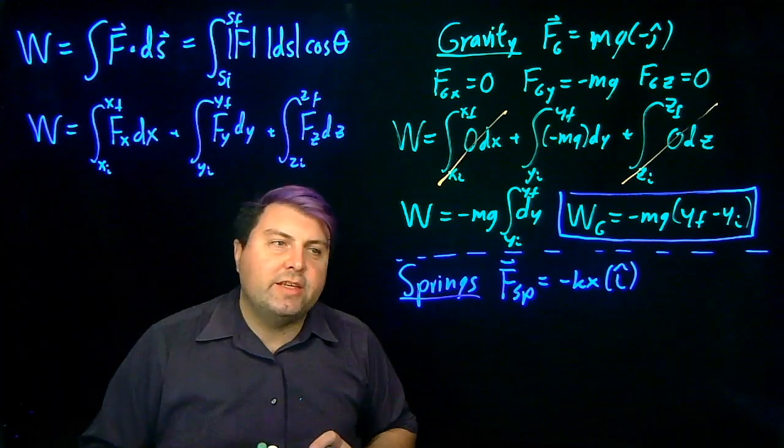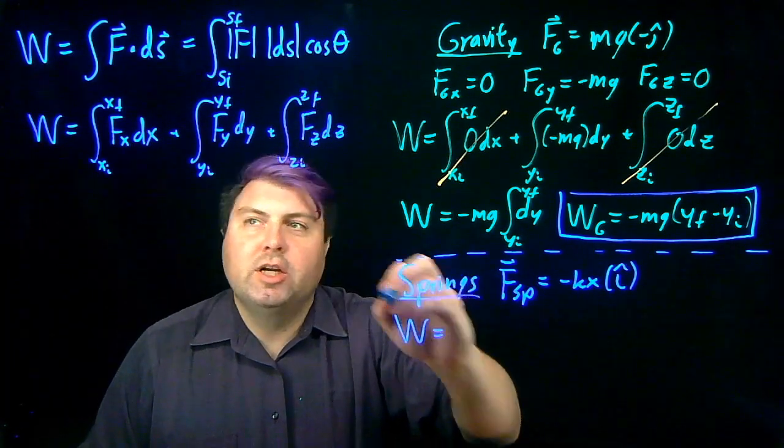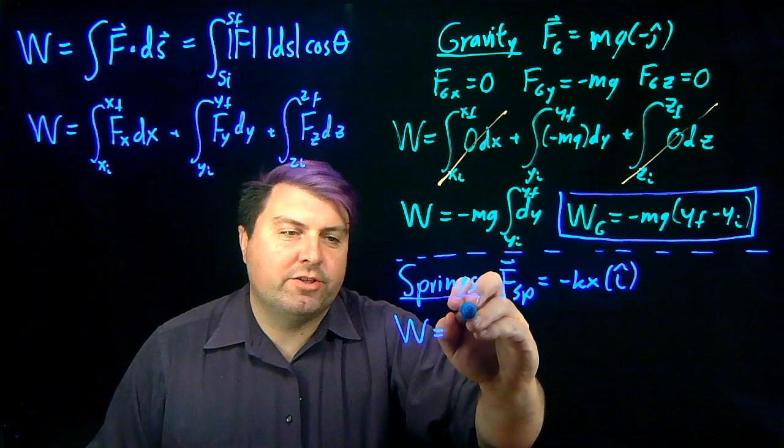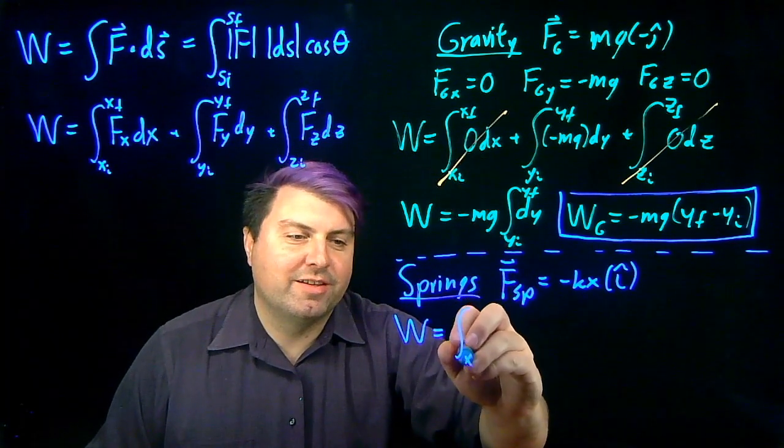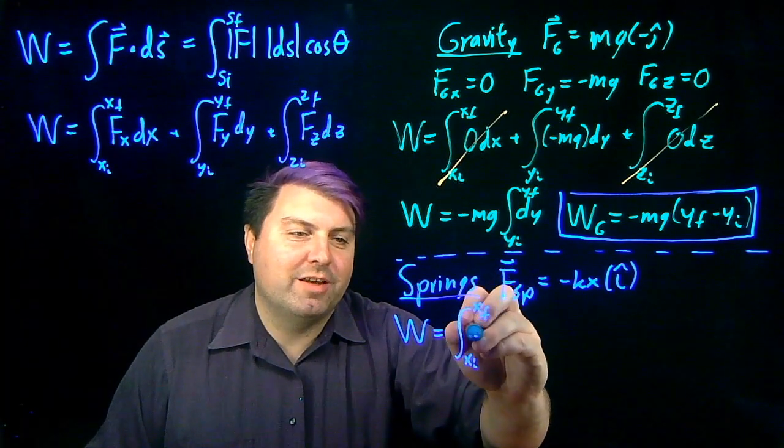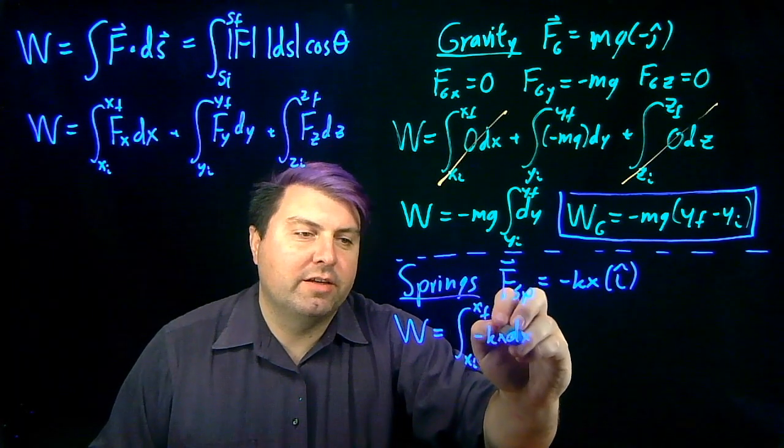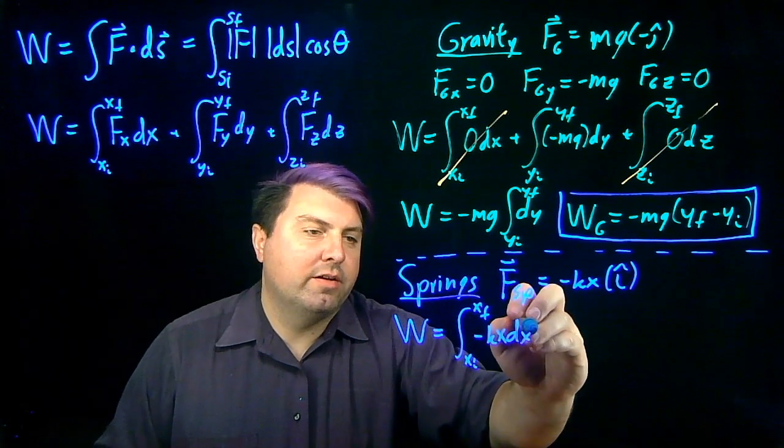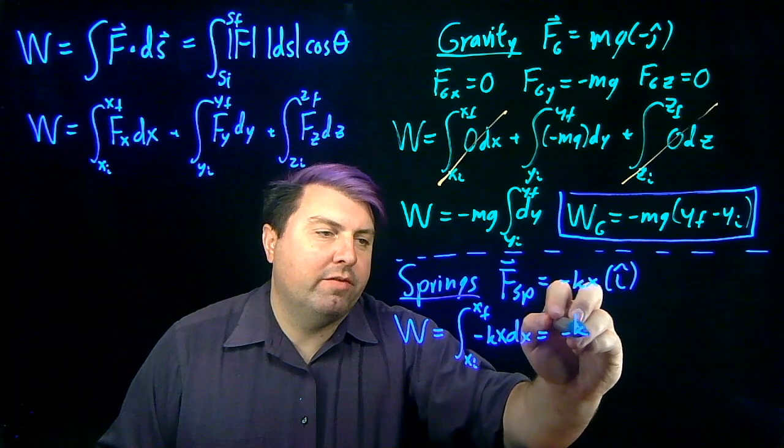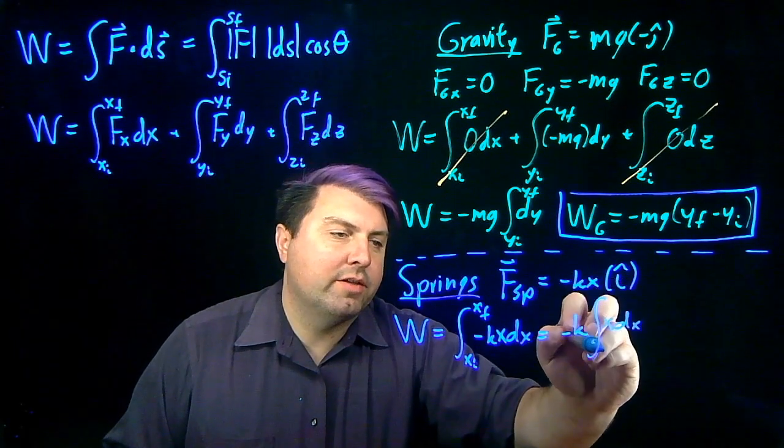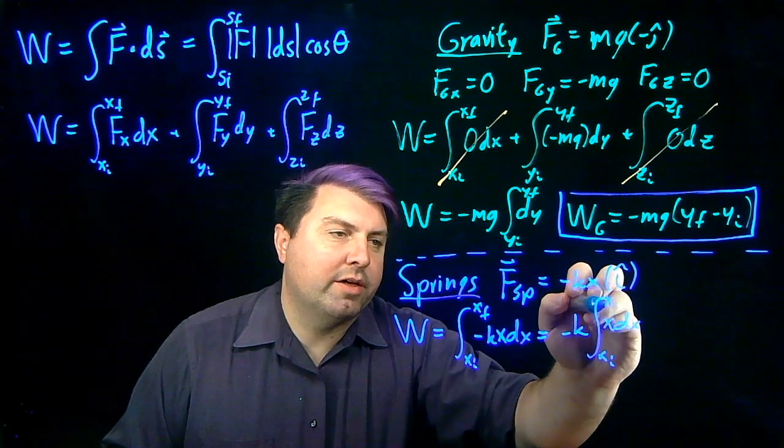Well, if that's the case, then our work, we only have to worry about this x direction, so we won't have to do this nonsense too many times. And so we have the integral of negative kx dx, which we can write as negative k integral of x dx from x initial to x final.